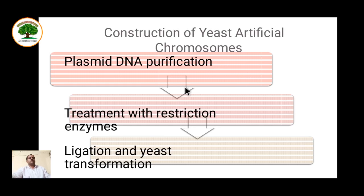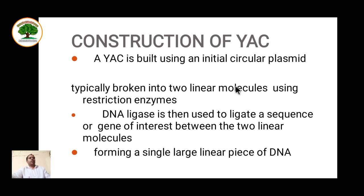For construction: first the plasmid is purified, then treated with different restriction enzymes. The fragments of interest are added and ligated, and yeast is transformed using selectable markers. It is built using an initial circular plasmid, which is broken into two linear molecules using restriction enzymes. DNA ligase is then used to ligate the sequence or gene of interest between the two linear molecules, forming a single large linear piece of DNA with the fragment of interest.